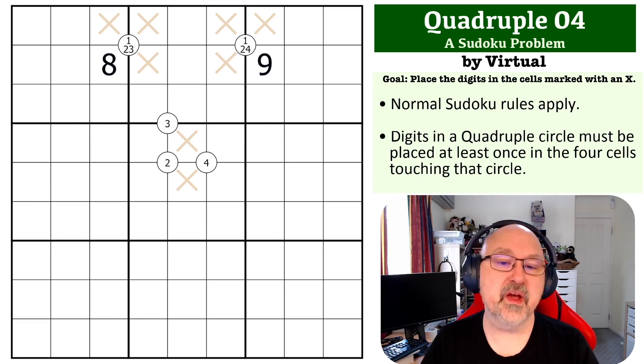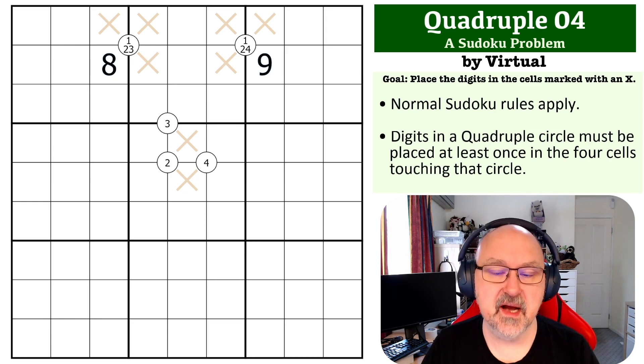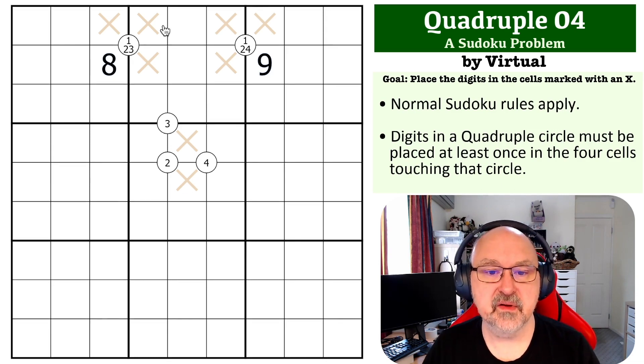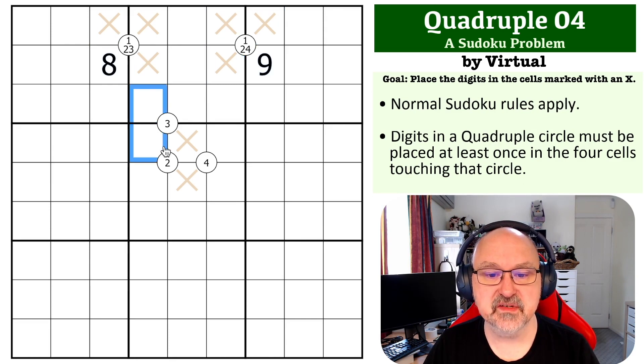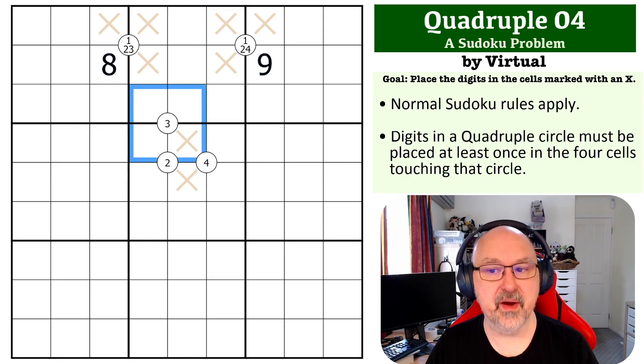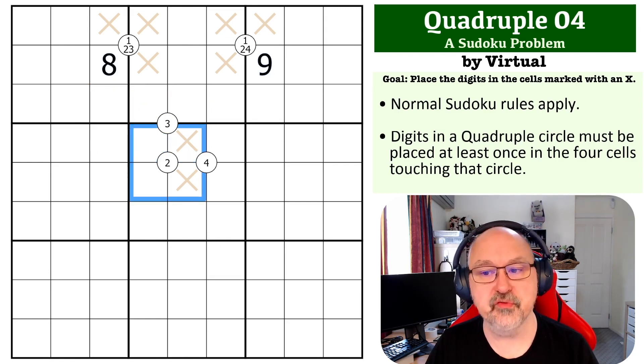The way quadruple clues work is that the numbers in the circles must be placed at least once in the cells around. You have to place a three somewhere around this quadruple clue, a two somewhere around this quadruple clue. That's the way quadruples work.